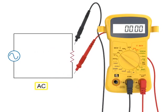Therefore, an AC voltmeter connected across the resistor in the AC circuit would read 10 volts.